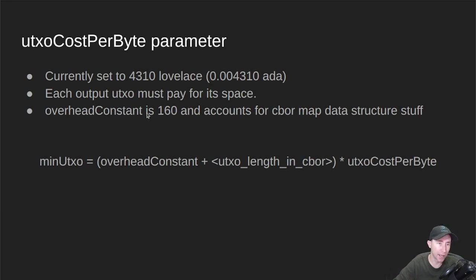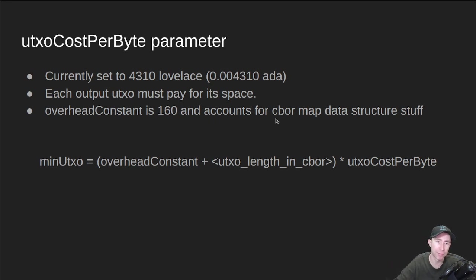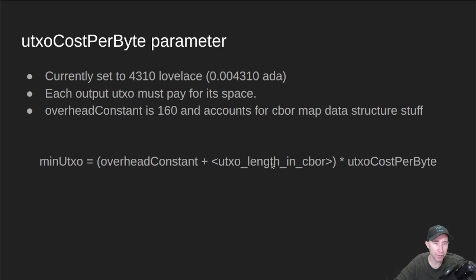There's also an overhead constant set to 160, which accounts for CBOR data structure overhead. Once we hit Babbage, the UTXO structure changed from an array to a map — we'll talk more about that when we get to the scam tokens. The calculation for MinUTXO is: overhead constant plus the UTXO length in CBOR bytes, then multiplied by the UTXO cost per byte. So after the UTXO is encoded to CBOR, you take its byte length, add the overhead constant, and multiply by 4,310 lovelace.